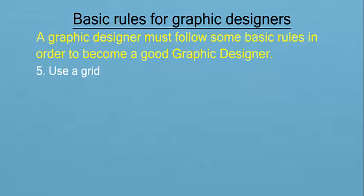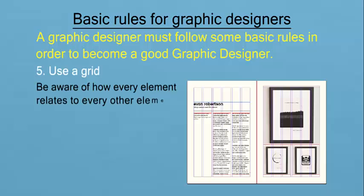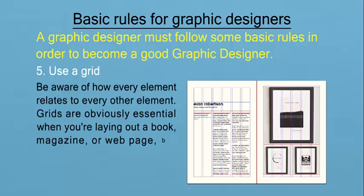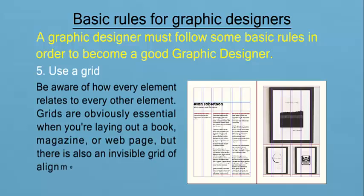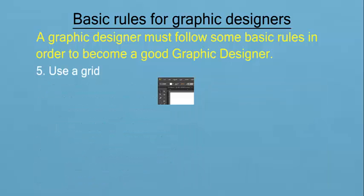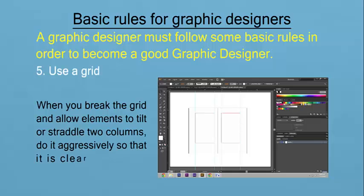5. Use a grid. Be aware of how every element relates to every other element. Grids are obviously essential when you are laying out a book, magazine or webpage. But there is also an invisible grid of alignment linking every visual element around us. When you break the grid and allow elements to tilt or straddle two columns, do it aggressively so that it is clear that it is a conscious choice.